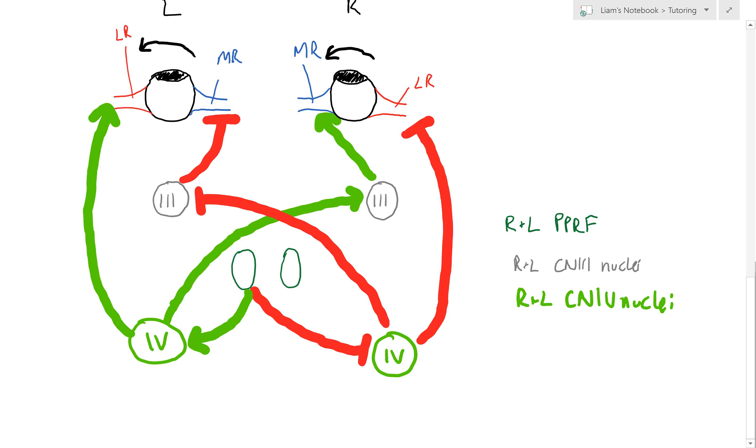You can see that we've got activation through the left PPRF activating the left abducens nerve nuclei and left lateral rectus, and also sending a connection to the right cranial nerve three (oculomotor nuclei) activating medial rectus. At the same time, we're getting inhibition of the right cranial nerve six nuclei, inhibiting the left cranial nerve three medial rectus and also the right lateral rectus. That's what's allowing that movement.